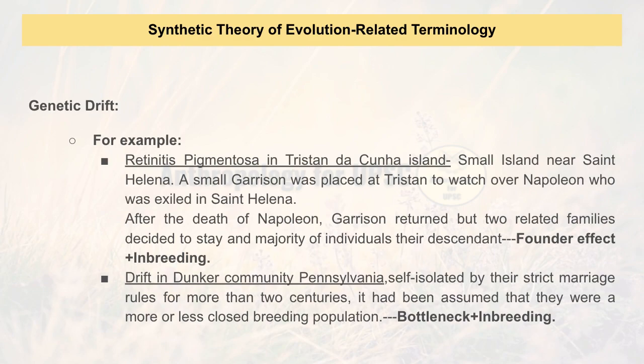Another example is the genetic drift in the Dunker community of Pennsylvania. This community has strict rules where they don't allow marriage outside their community and remain in self-isolation. Because of this, they married close relatives, causing their population to drift, which resulted in a bottleneck and inbreeding effect.